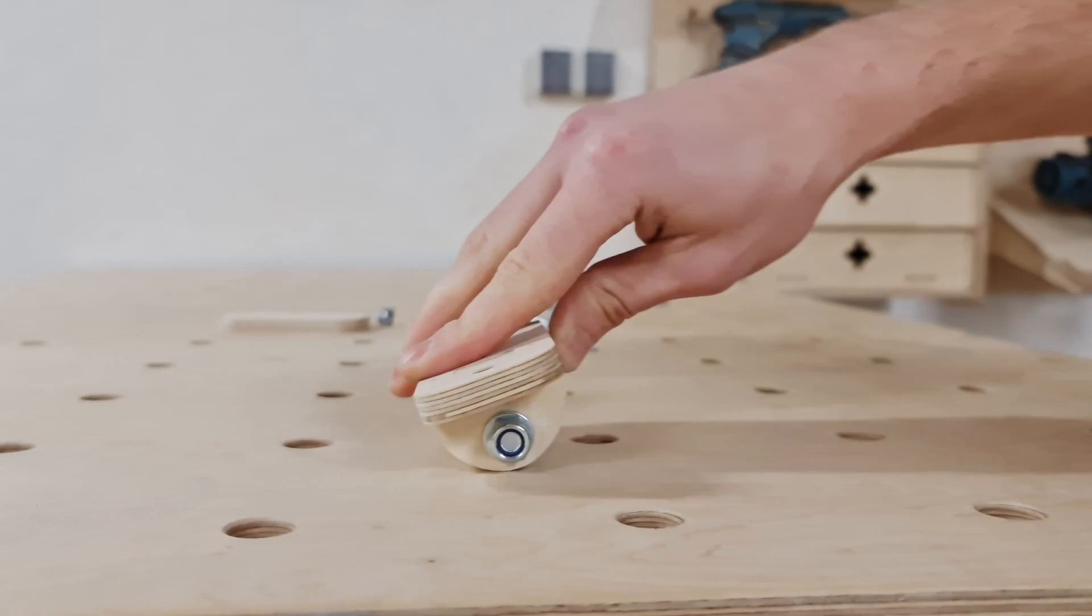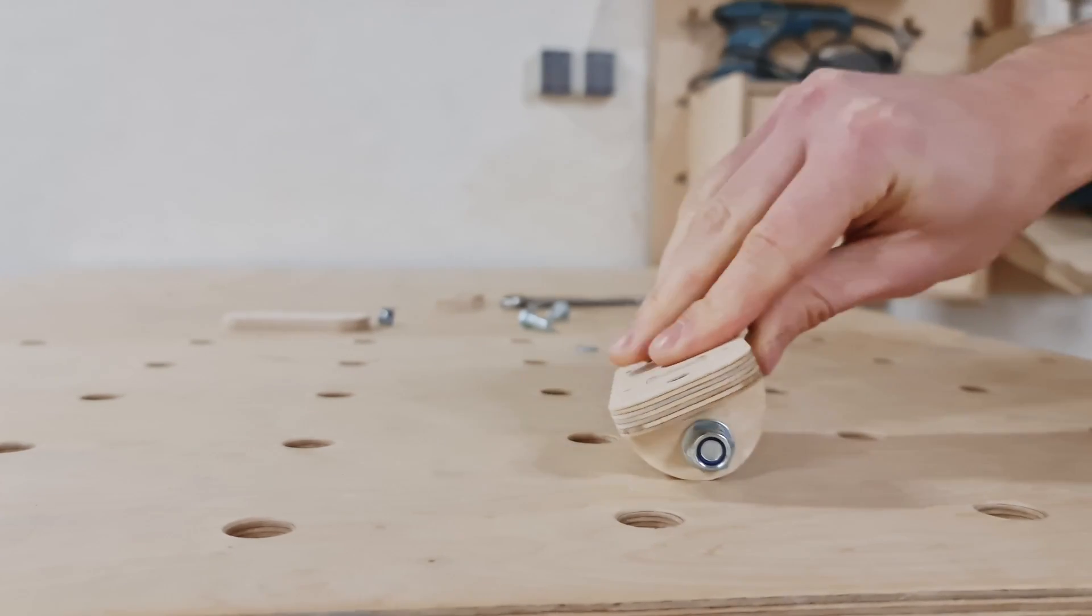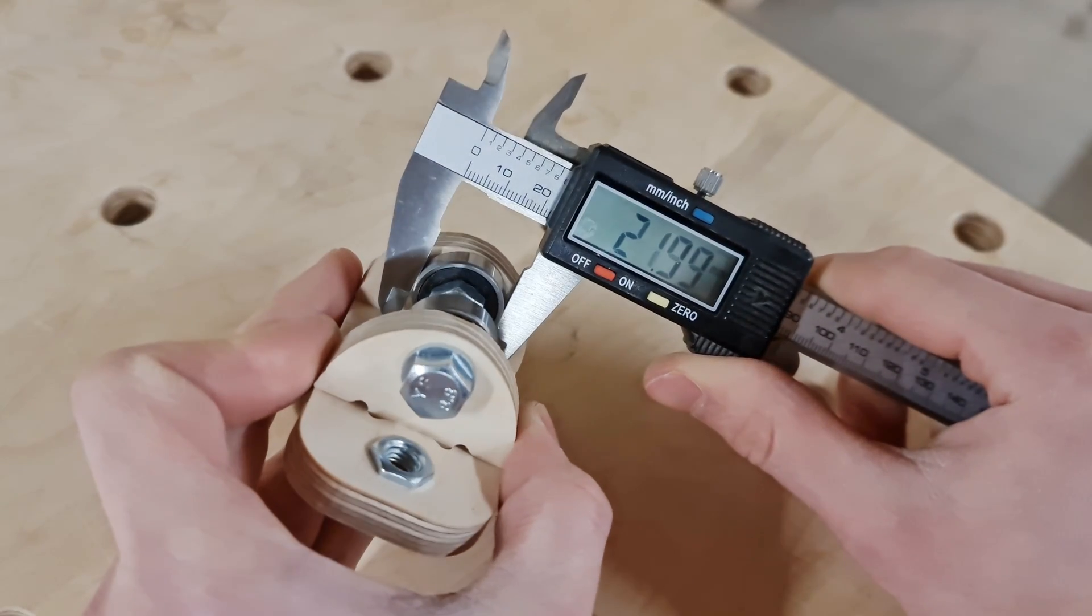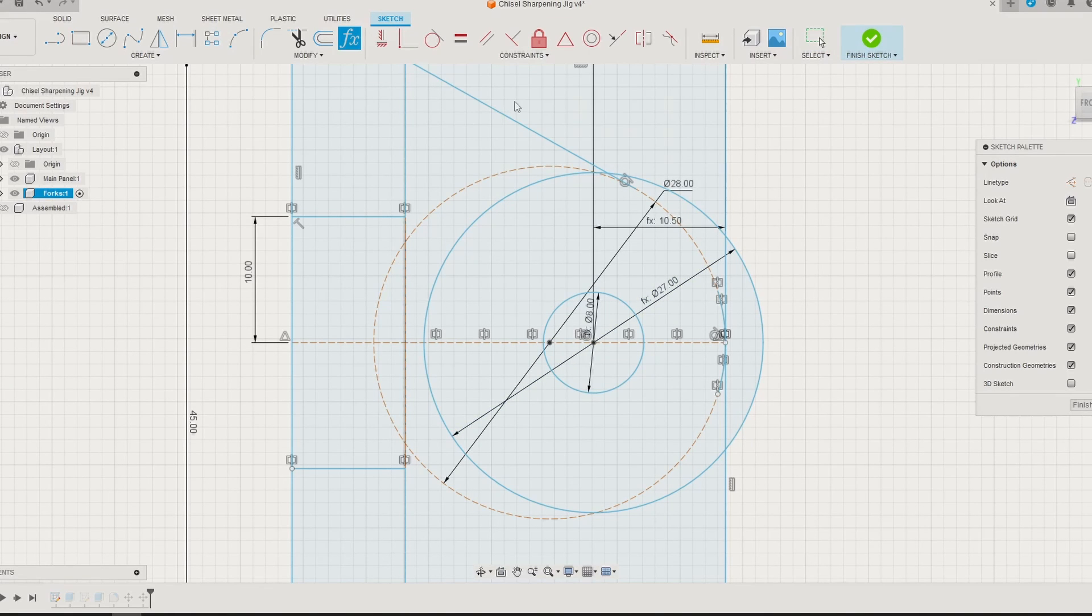After testing it out on the workbench I realized we had a problem. When tilting the jig, the bearing support part made contact with the table. So I measured the bearing and realized it was smaller than the bearing diameter I had set when designing the jig.